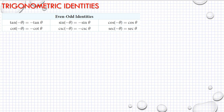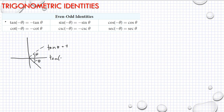Even and odd identities. For example, if I'm going to show tangent of negative theta — here, this is our theta and here is our negative theta. Tangent theta is equal to positive because it is in the first quadrant, but tangent of negative theta is equal to negative because it is in the fourth quadrant.